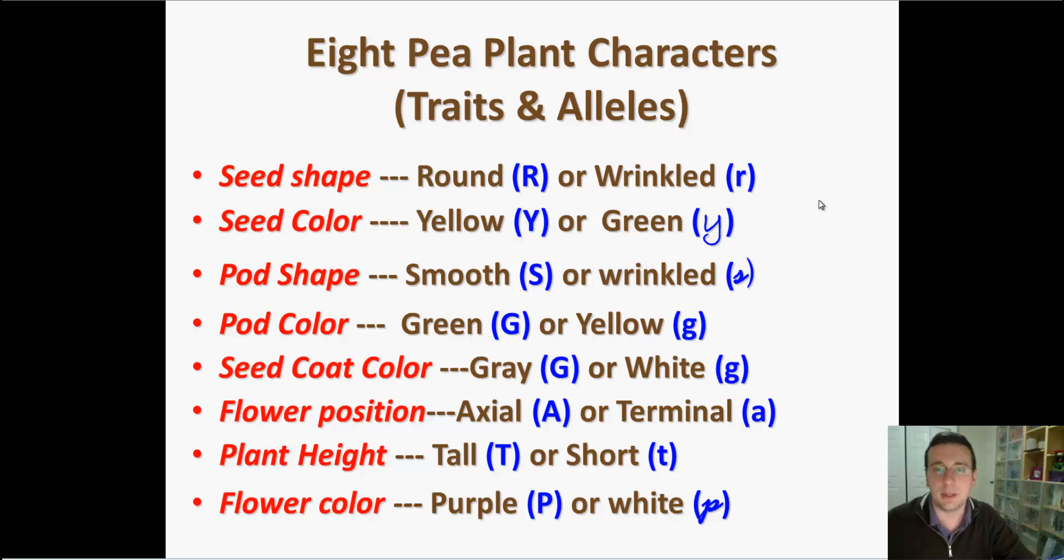Now, this is not going to be an issue in the Punnett squares that we're doing because in all of Mendel's Punnett squares, the dominant was the one that was discovered first. So the big ones are always the dominant ones in these examples, but it doesn't have to be that way, and I wanted to make that clear.